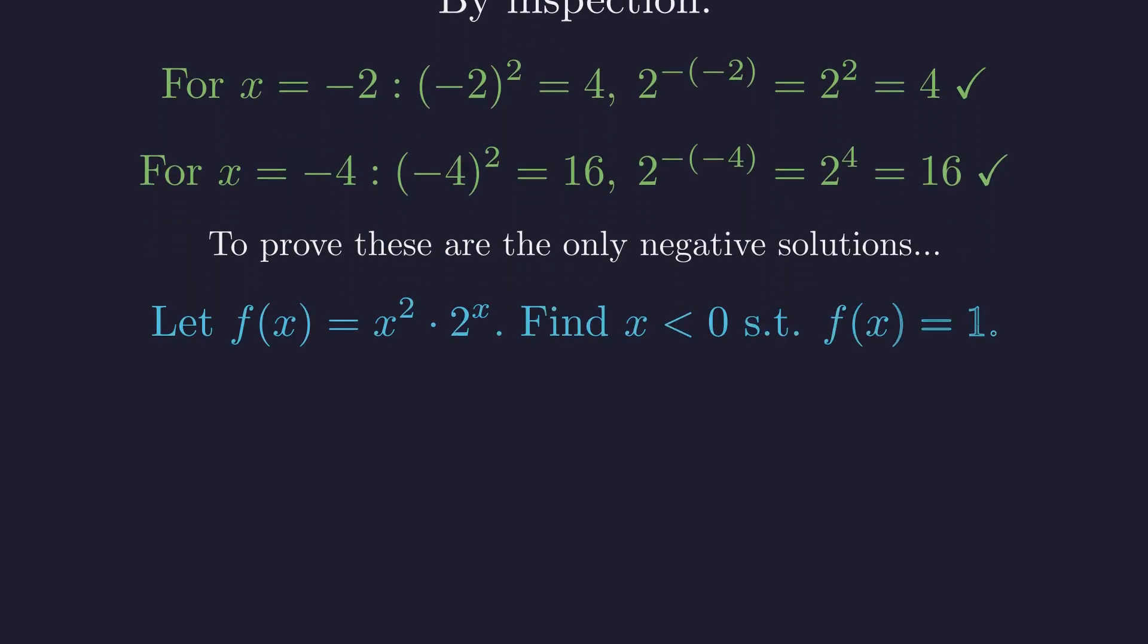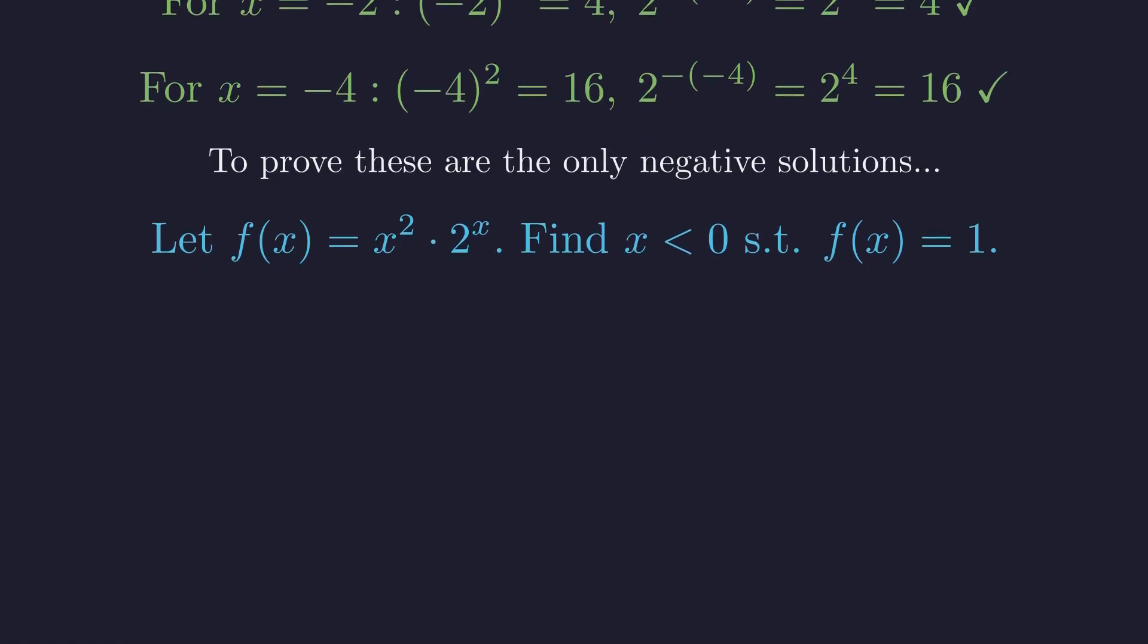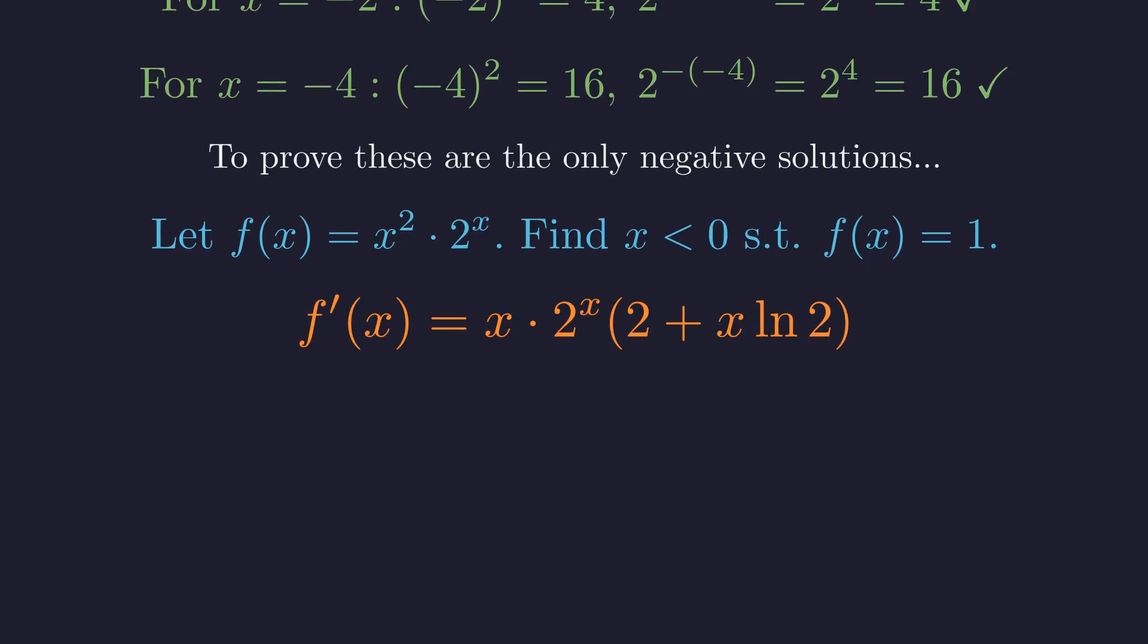We can rearrange the equation to x squared times 2 to the x equals 1. Let's define the function f of x and find where it equals 1 for negative x. The derivative found using the product rule will reveal the function's behavior. To find critical points, we set the derivative to 0.